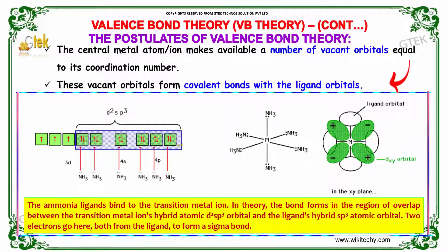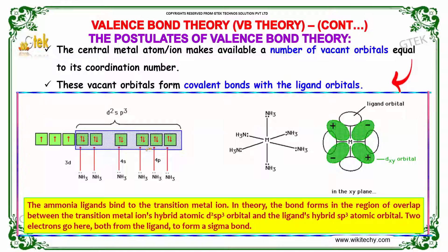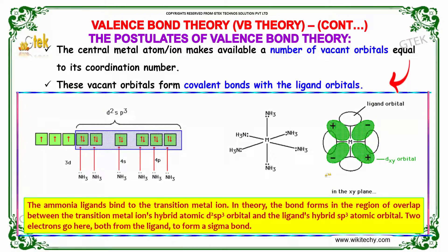The central metal ion makes available a number of vacant orbitals equal to its coordination number. These vacant orbitals will form a covalent bond with the ligand orbitals. You are able to see in the picture that the ammonia ligands bind to the transitional metal ion. The bond forms in the region of overlap between the transition ion's hybrid atomic D2sp3 orbital and the ligand's hybrid sp3 atomic orbital.